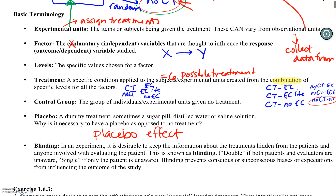Those are the main definitions. In terms of what's tested, the big ones are being able to identify factors, independent variables, or explanatory variables and the response — that's what we do in the homework. Identifying the different treatments or how many treatments there might be is another important one.